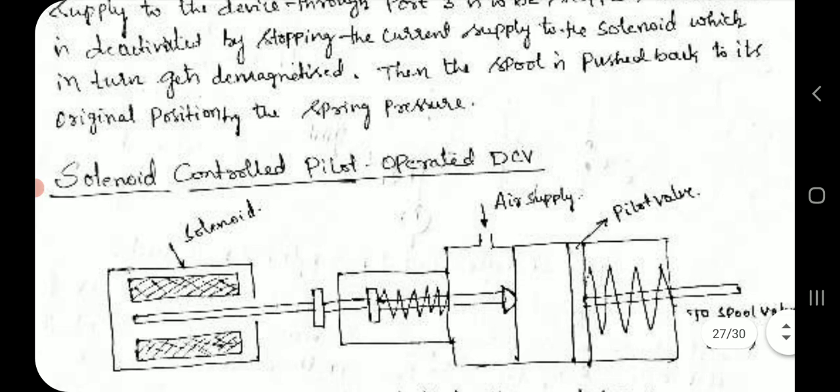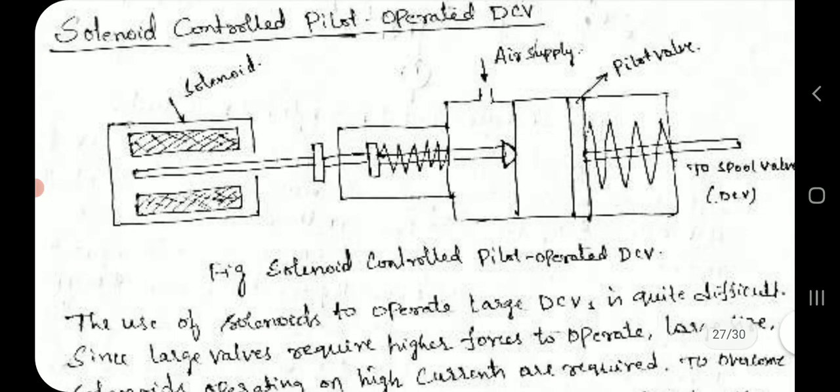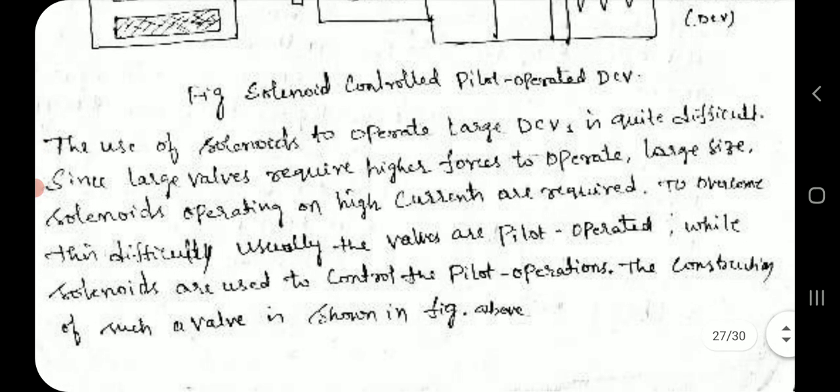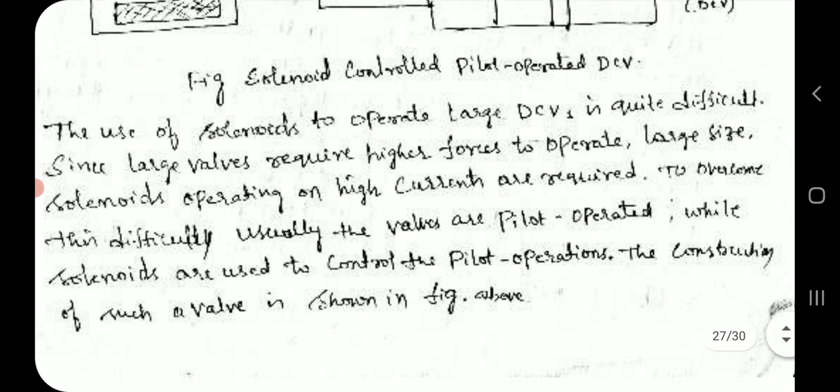Solenoid Controlled Pilot Operated Direction Control Valve. The use of solenoids to operate large direction control valves is quite difficult, since large valves require higher forces to operate. Large size solenoids operating on high currents are required. To overcome this difficulty, usually the valves are pilot operated while solenoids are used to control the pilot operations.